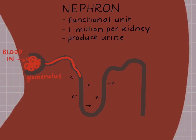As it continues through the nephron, there's a series of channels that are going to allow important molecules like water and electrolytes to go back into the bloodstream and back to the main part of the body.